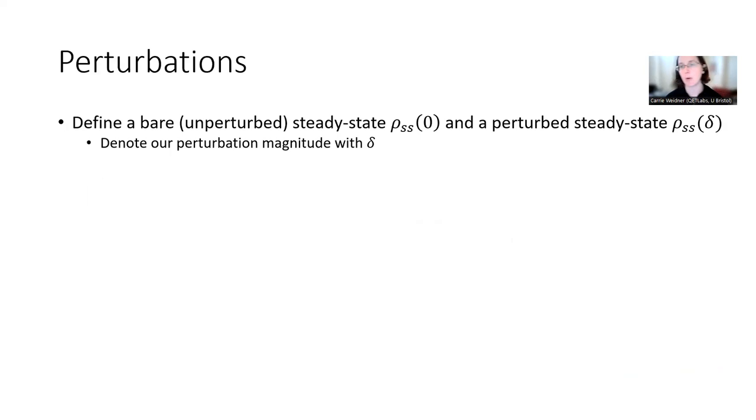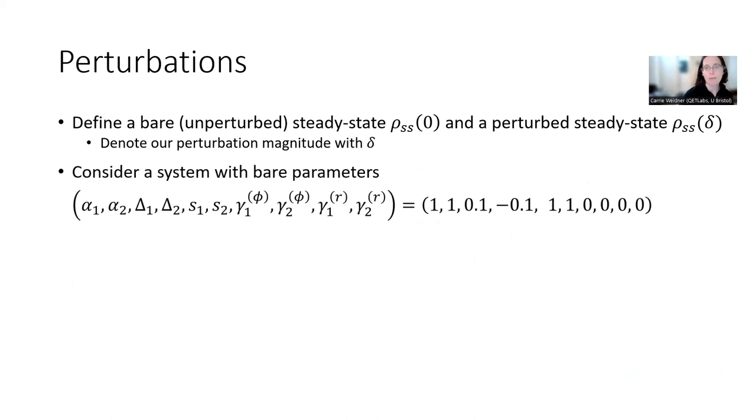And because we're looking at robustness, we're looking at perturbations. So we describe a bare steady state, rho steady state, as a function of our perturbation magnitude delta. And our bare system is just rho ss at zero. And the system has bare parameters that look like this, where basically we have the two qubit drive terms, the two qubit detuning terms. And then these are the coupling terms, the collective coupling terms, as well as our dephasing and our decay terms. So you see that we set our dephasing and decay all to be zero. And basically, we have, we're driving and collectively coupling these two qubits. And the detunings are anti-symmetric with one another.